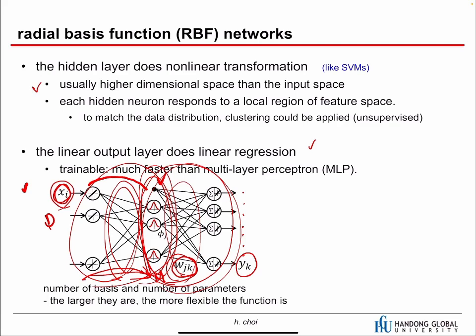The number of bases and number of parameters are hyperparameters. The larger they are, the more flexible the function is, but increasing the number of bases and parameters also increases the probability of overfitting, as always.